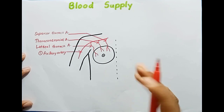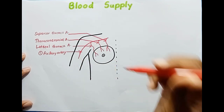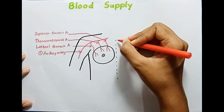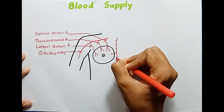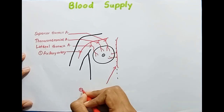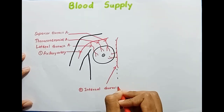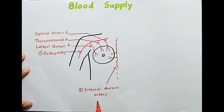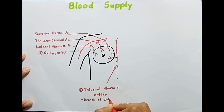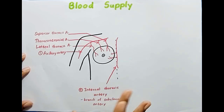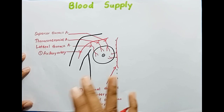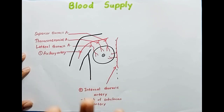The second arterial supply is the internal thoracic artery. Here you can see the internal thoracic artery. This is a branch of the subclavian artery.